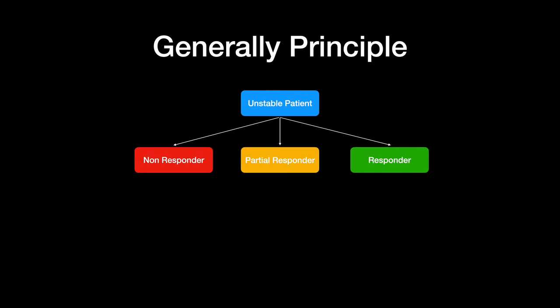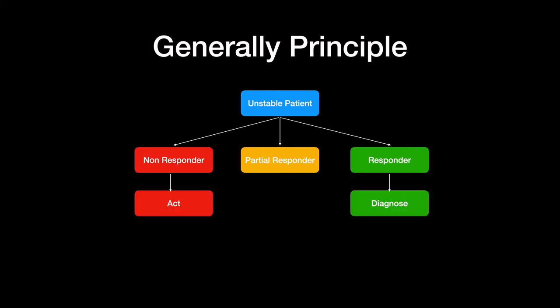Let's start at the start. An unstable patient — provided they're not penetrating trauma requiring urgent surgery, a mangled extremity, or a non-survivable head injury — if they're a blunt trauma patient who comes in hemodynamically unstable with multiple areas of injury, you perform your ATLS as usual. And eventually they're either a non-responder, a responder, or sometimes a partial responder.